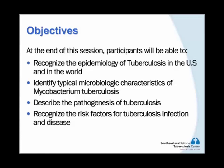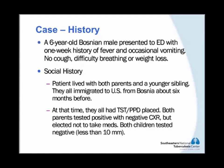I'd like to start with a case to illustrate several points. This is a six-year-old Bosnian male who presented to our local emergency department with a one-week history of fever and occasional vomiting. He had no history of cough, difficulty breathing, or weight loss. His social history was relevant because he and his parents and a younger sibling had immigrated to the United States from Bosnia about six months before he presented to the emergency room. At that time, they had gone through the refugee clinic and all of them had been screened for TB via PPDs. Both the parents were tested positive but had negative chest x-rays, and they elected not to take medicines that were offered. Both children at the time were negative.